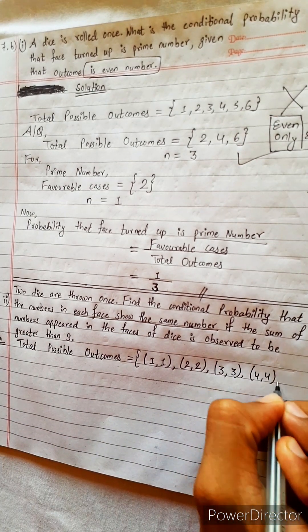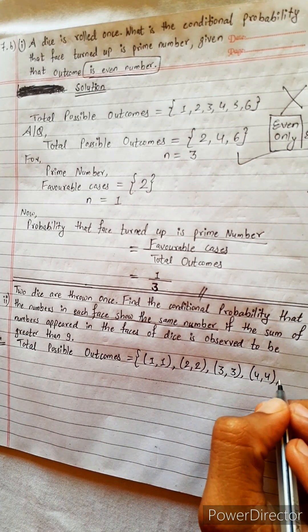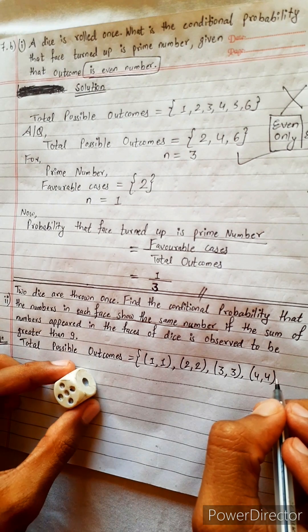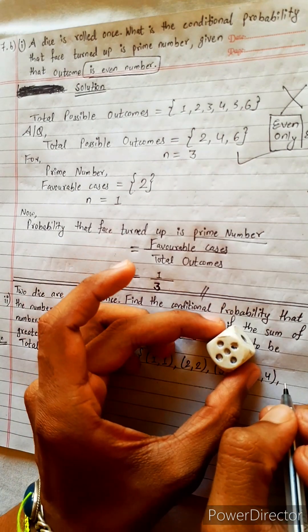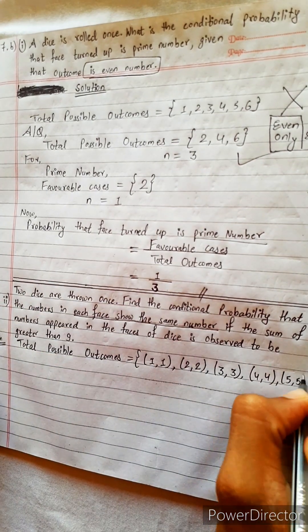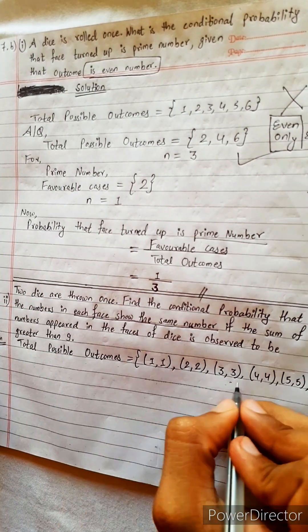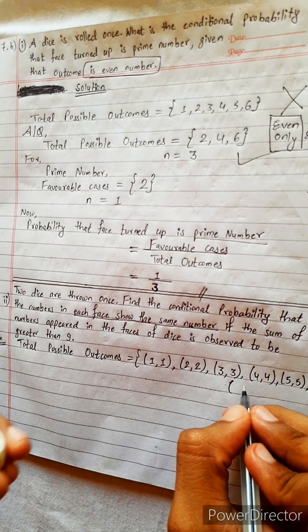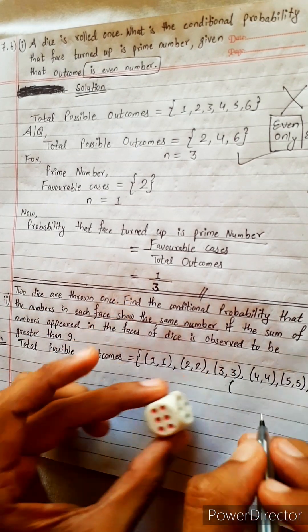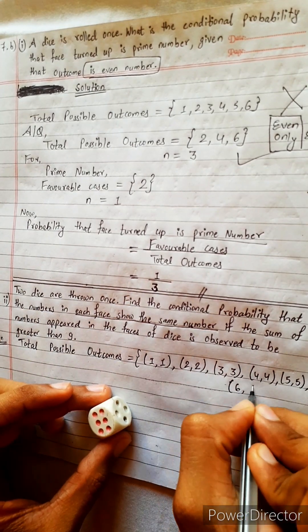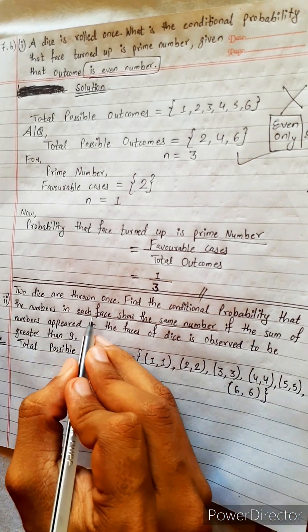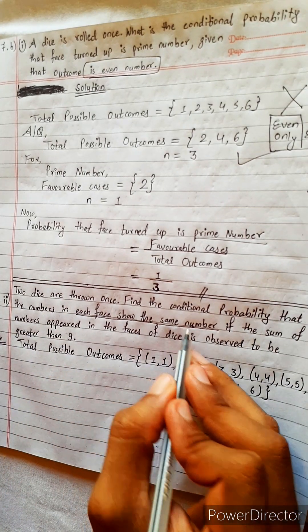Four-four. And similarly, here five, and in another dice also we will get five. Five-five. And suppose we got here six, and in another dice also we will get six. The question is saying this — each face saw the same number.